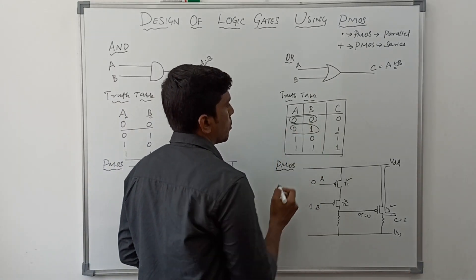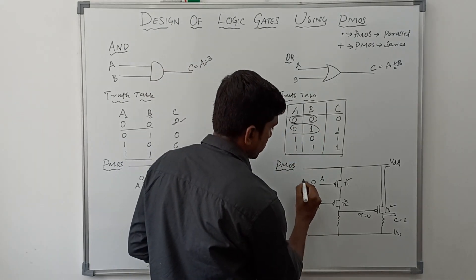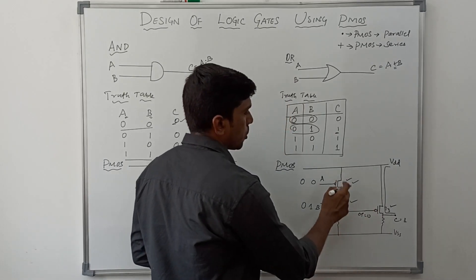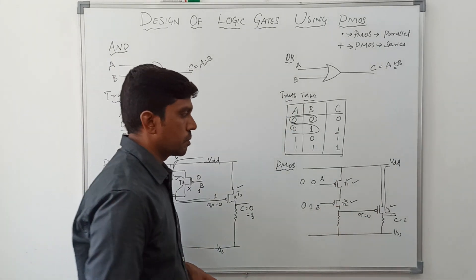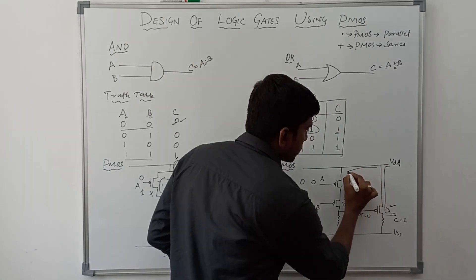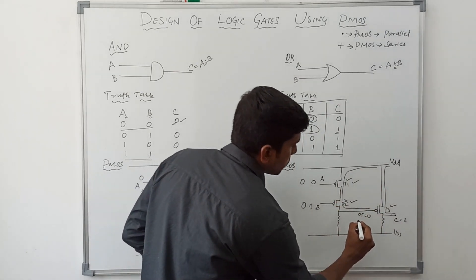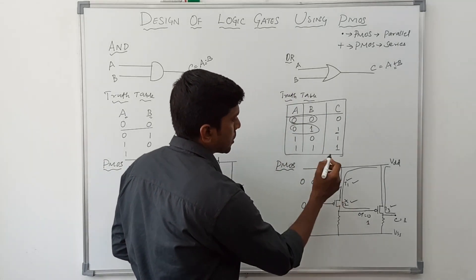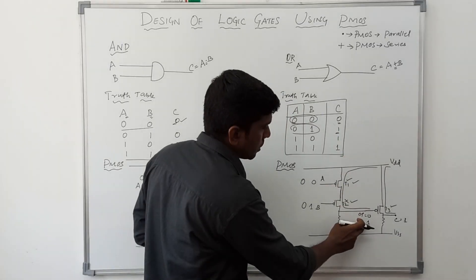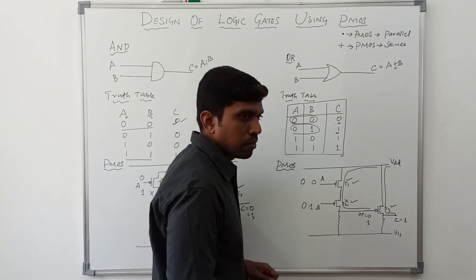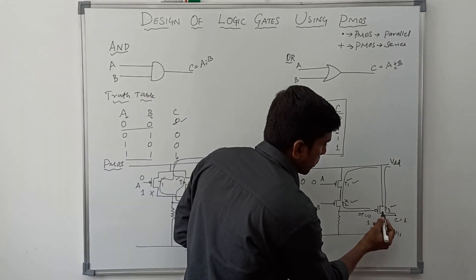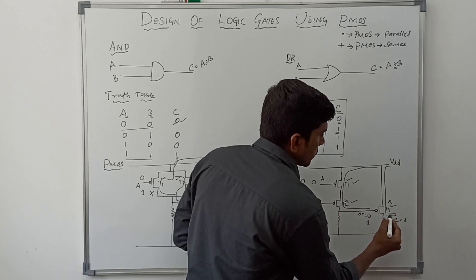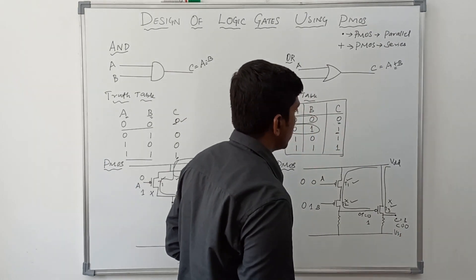Now verifying one more input: A=0 and B=0. Both T1 and T2 transistors turn on, so VDD is connected to the output through T1 and T2, giving output 1. But the actual output should be 0 — this is an invalid result. When this 1 is given to the input of the inverter, T3 transistor turns off, so C goes to 0. Both results are now correct.